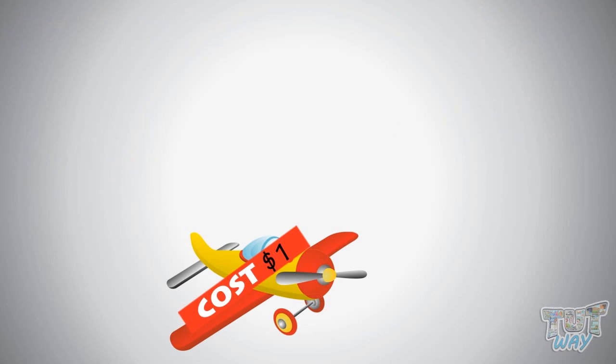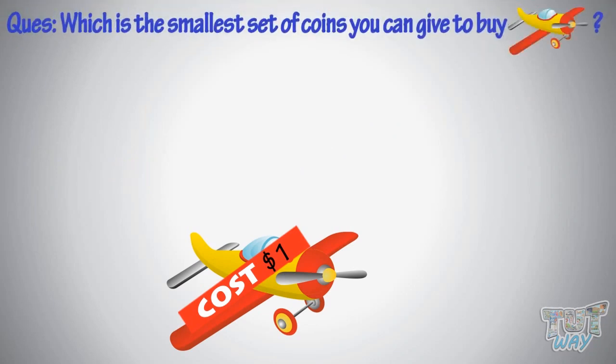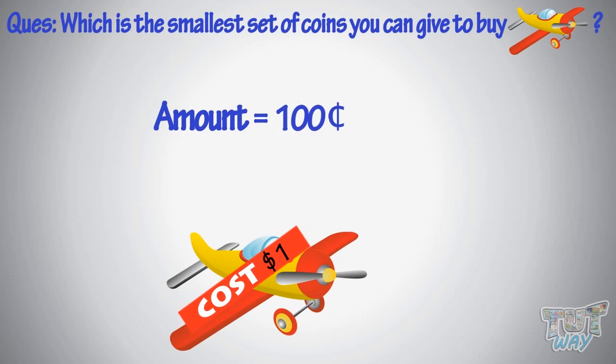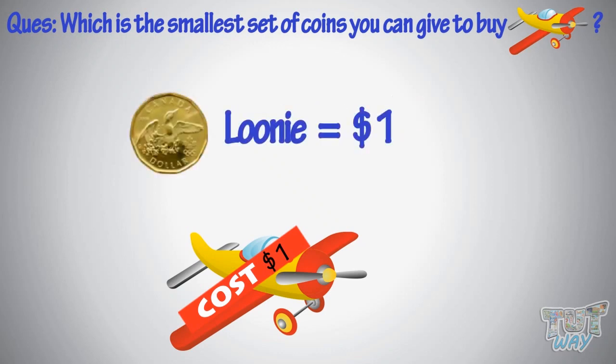Now, which is the smallest set of coins you can give to buy this toy? The amount is equal to 100 cents, or a dollar, which is equal to a loonie. So you can simply pay a loonie for this.